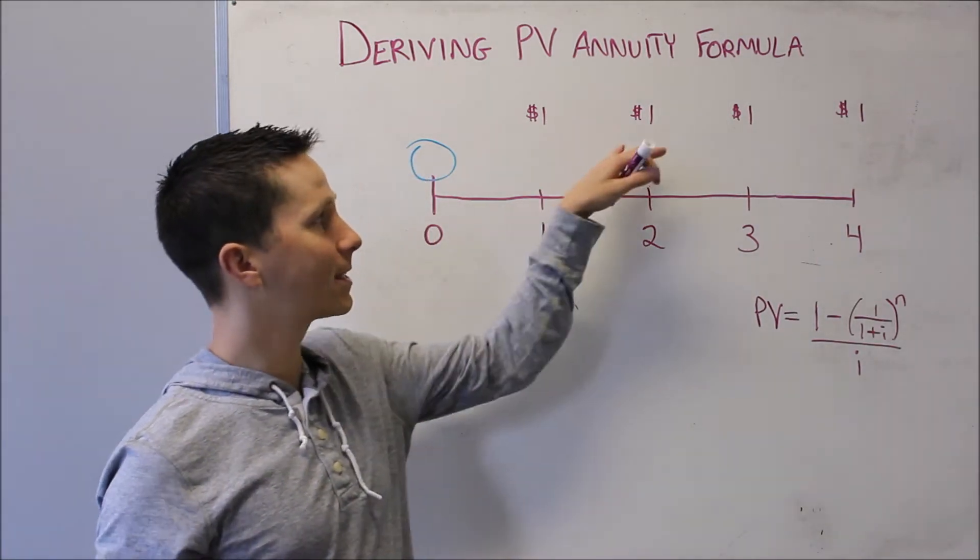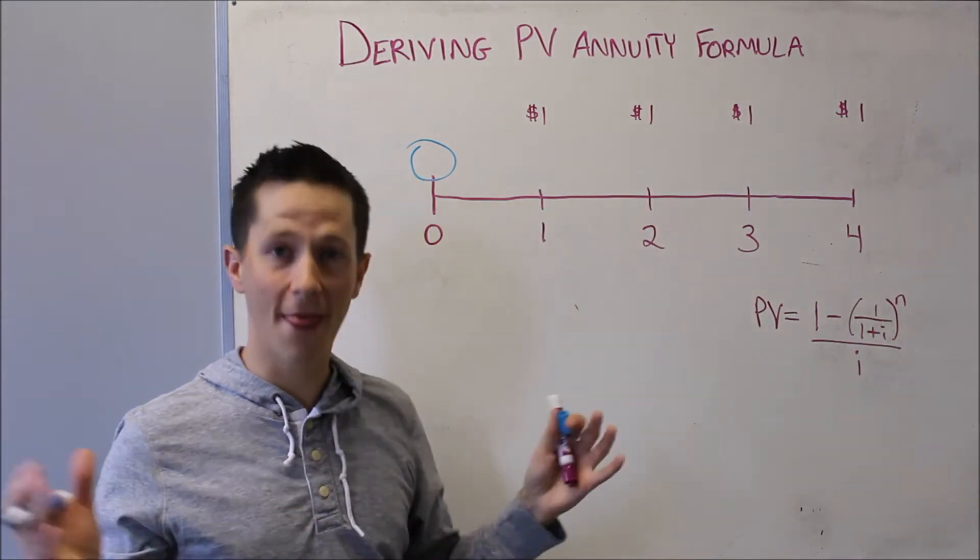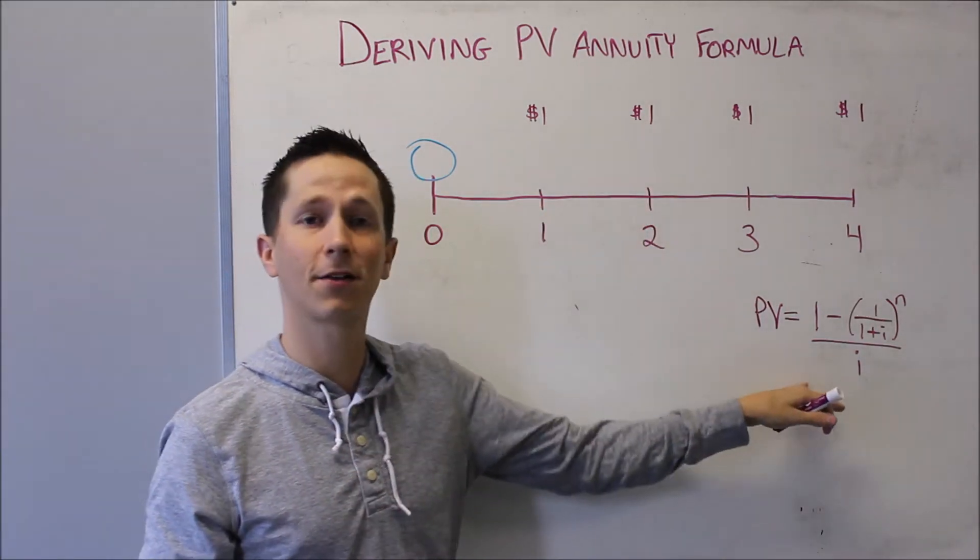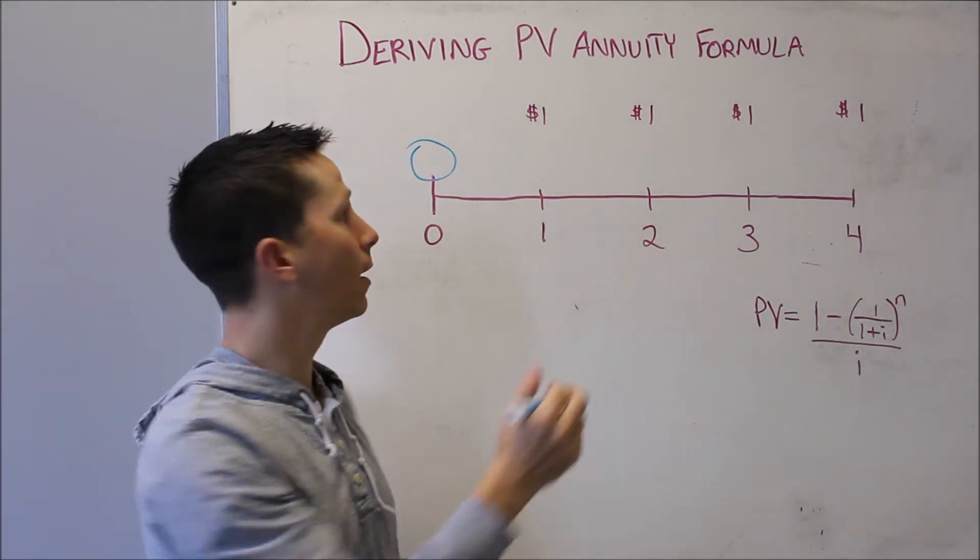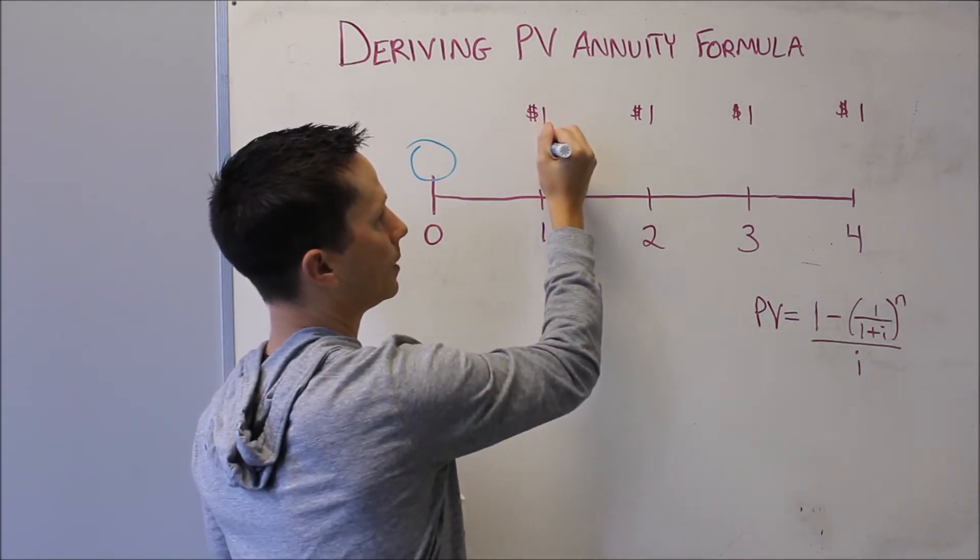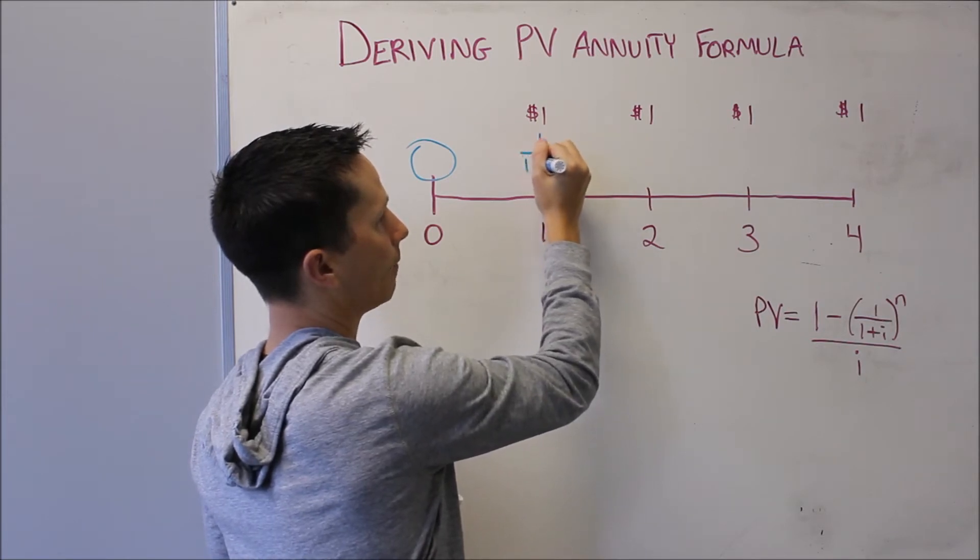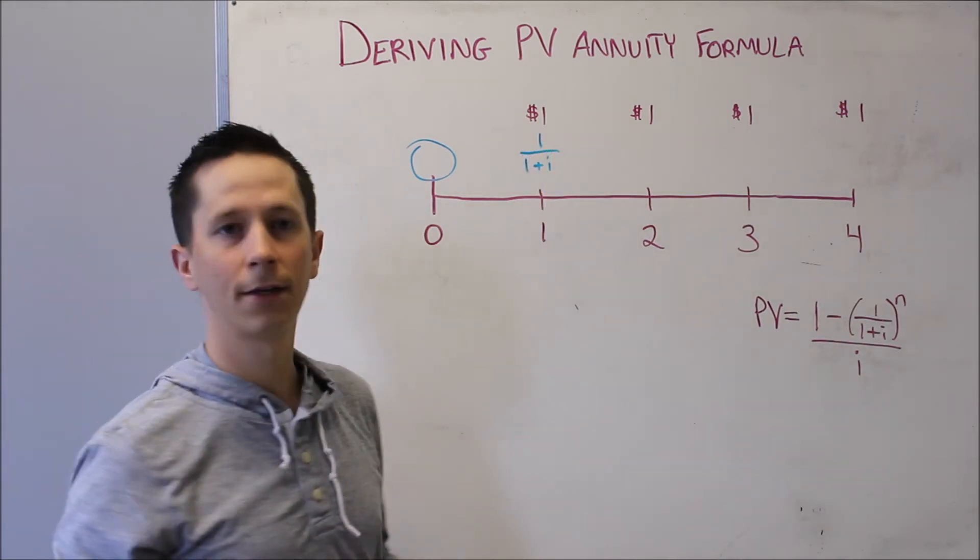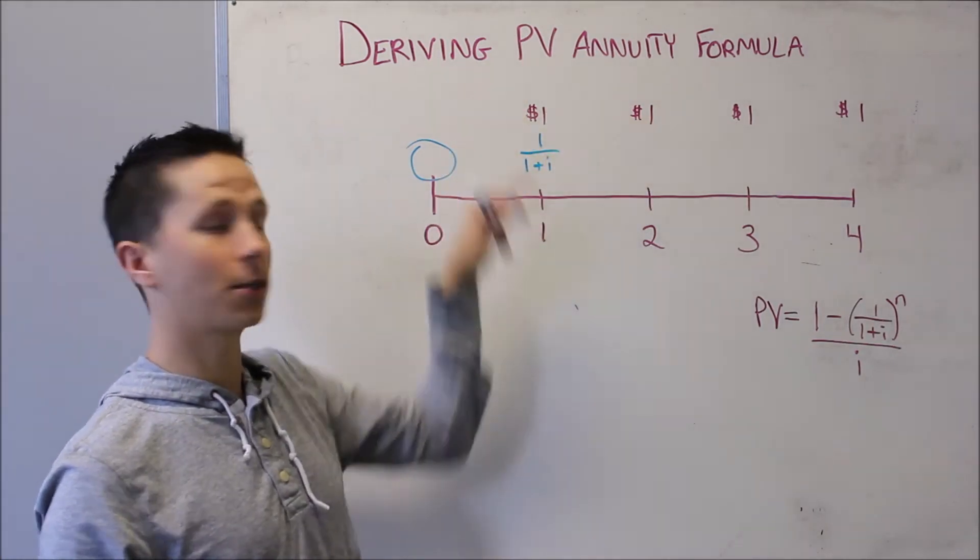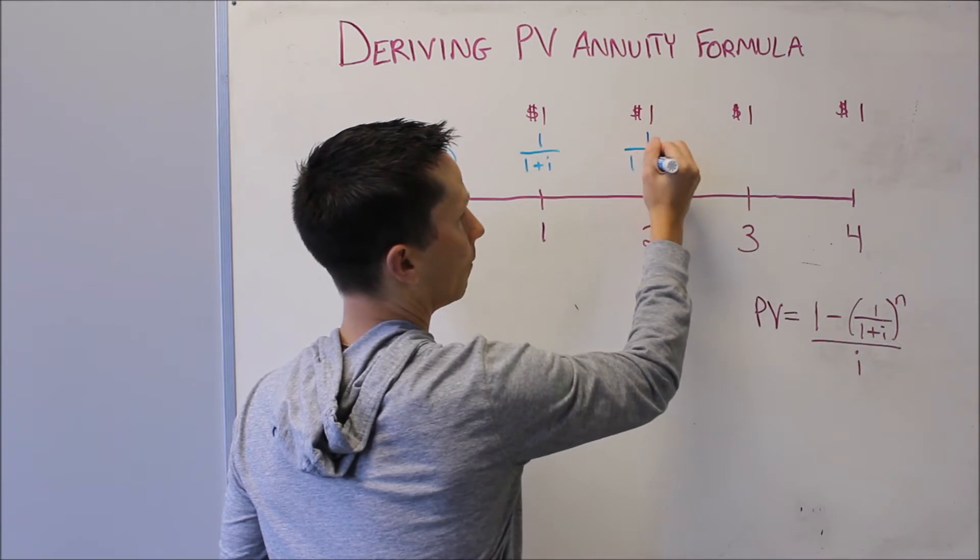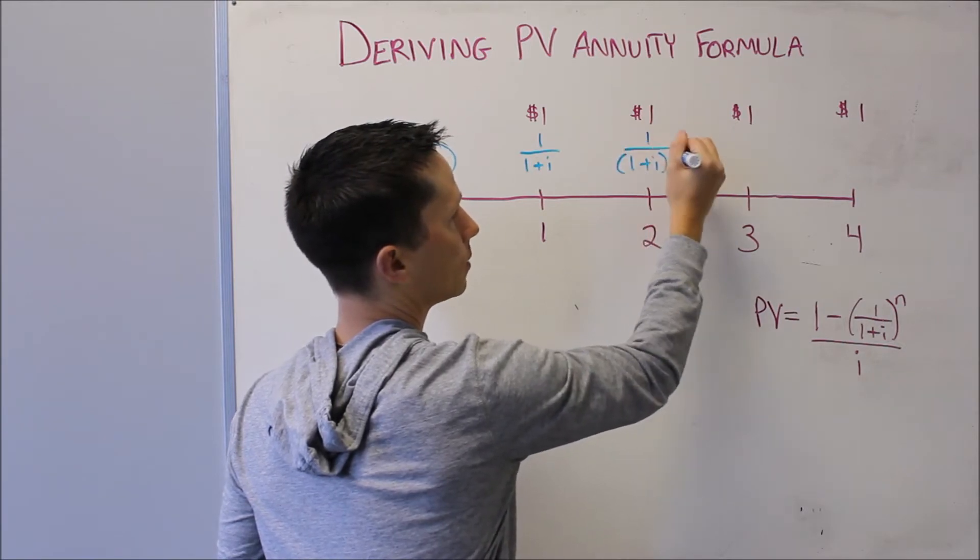We need to discount each of these individual cash flows, and then add all of those up. That's how this formula comes to be. So if I'm going to discount this back to time zero, I know I need to take the dollar and divide it by 1 plus i, because it's got to come back one period. This dollar has to come back two periods. So I'm going to take that dollar and divide it by 1 plus i squared.